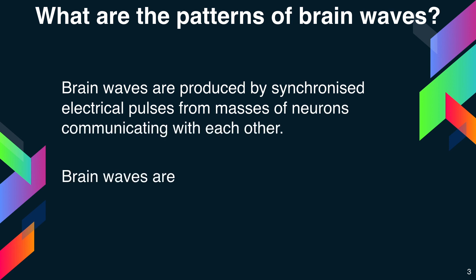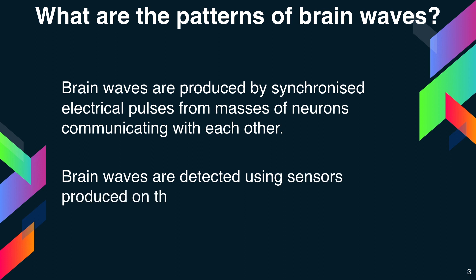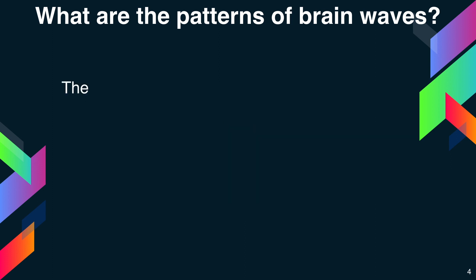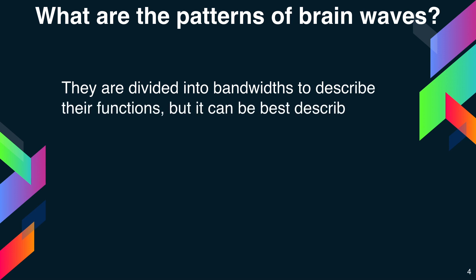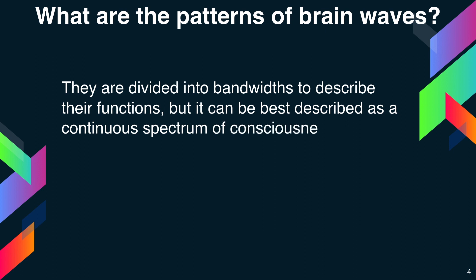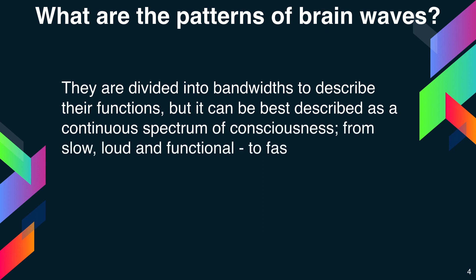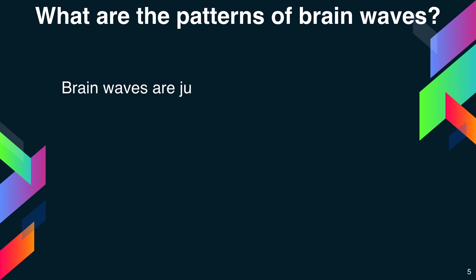Brain waves are detected using sensors placed on the scalp. They are divided into bandwidths to describe their functions, but can best be described as a continuous spectrum of consciousness — from slow, loud and functional, to fast, subtle and complex. Brain waves are just like musical notes.